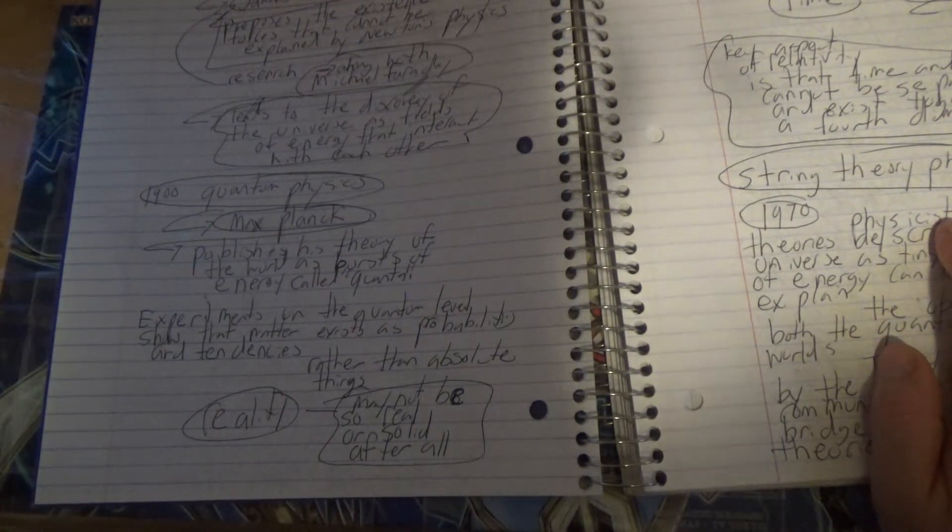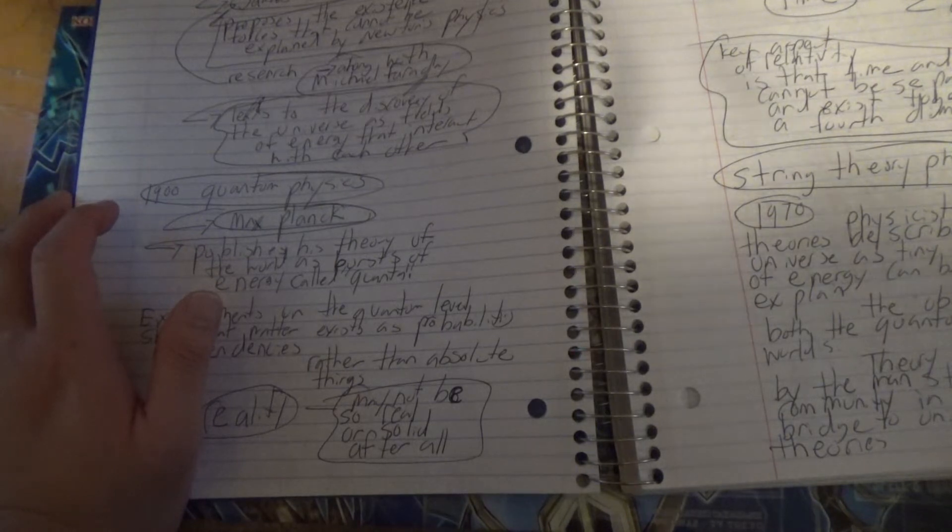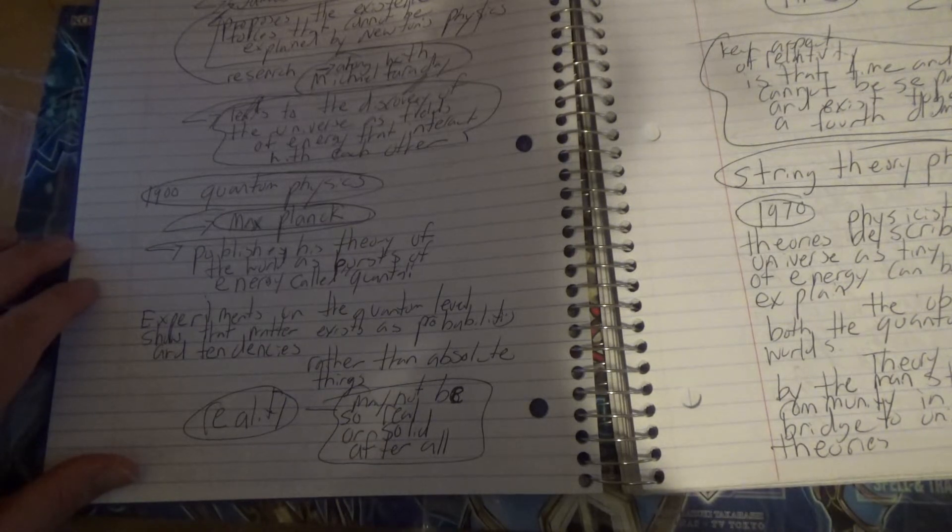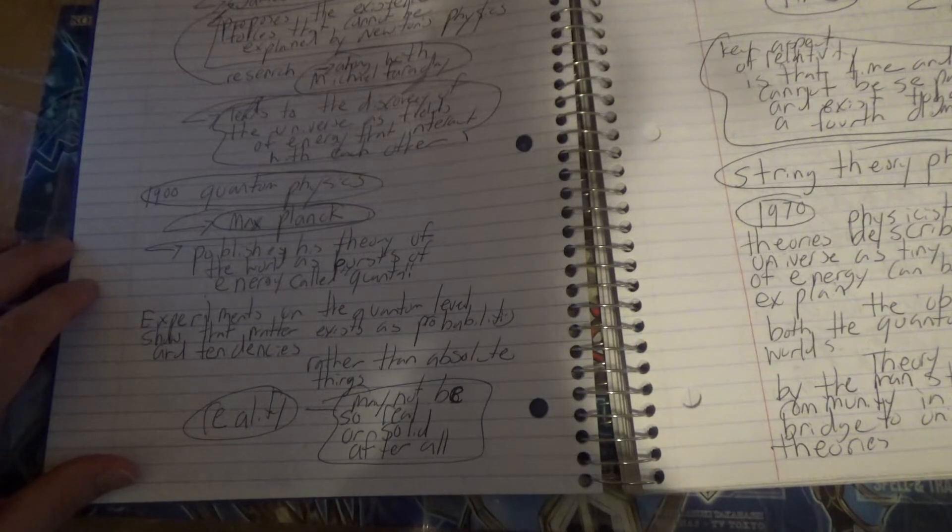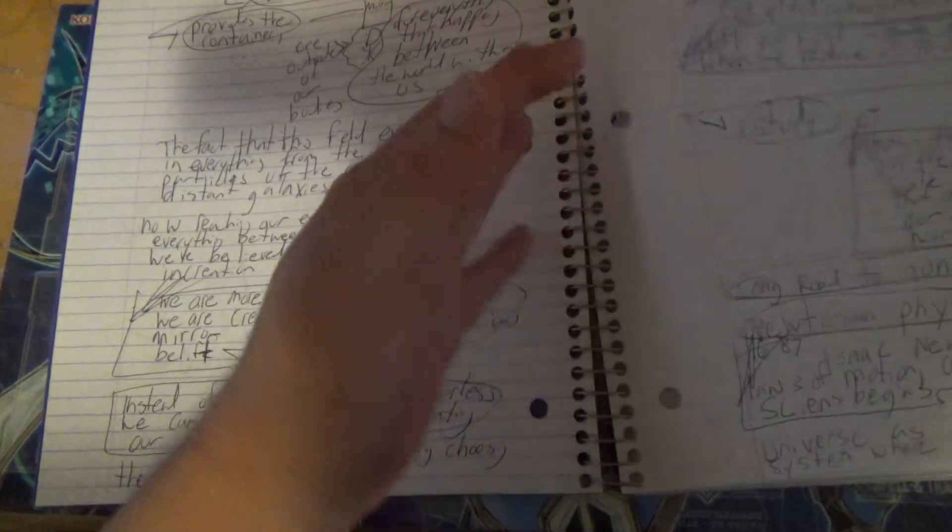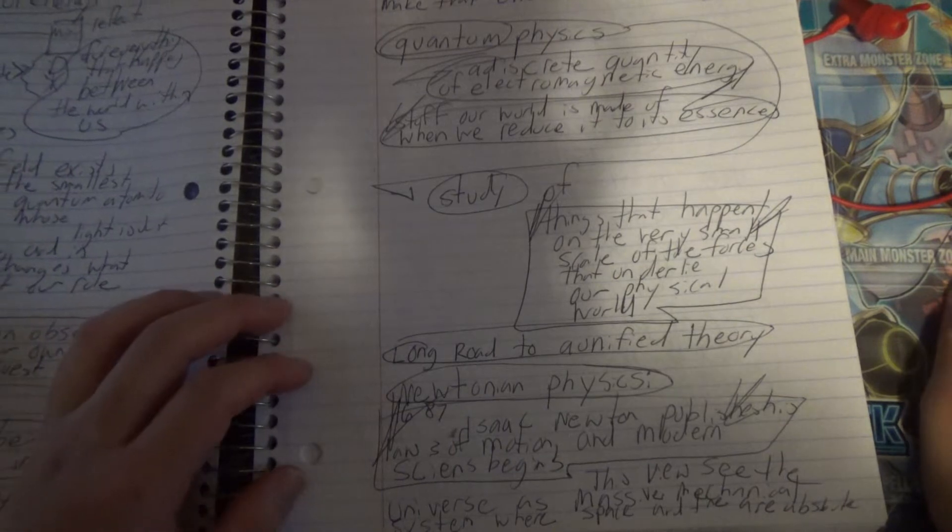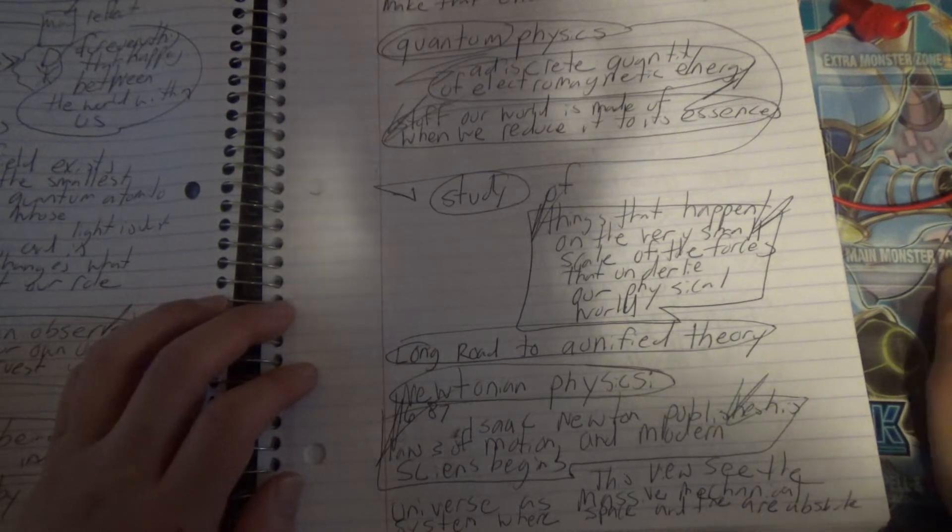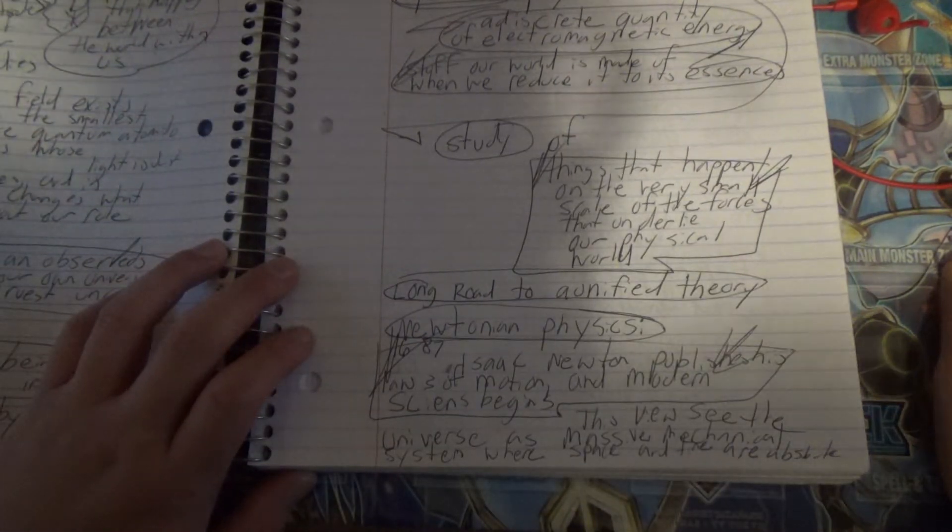Where did the theory come from? These theories come from Max Planck in the 1900s, publishing history of the world as bursts of energy called quanta. Experiments on the quantum level showed that matter exists as probabilities and tendencies rather than absolute things. Reality may not be so real or solid after all.